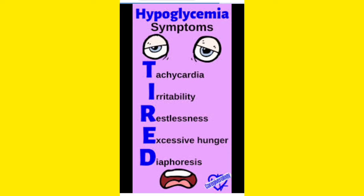R means restlessness — the patient is very restless. So T-I-R: tachycardia, irritability, and restlessness. Then E and D: E means excessive hunger and D means diaphoresis.